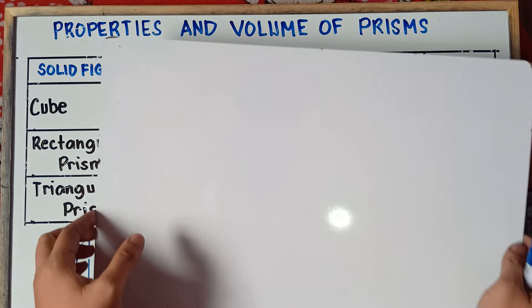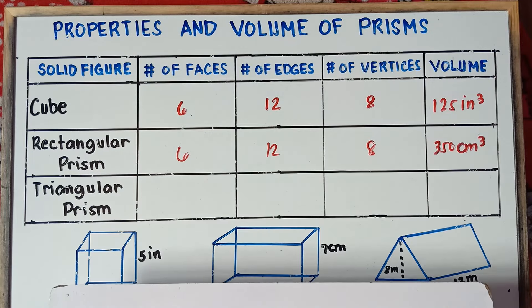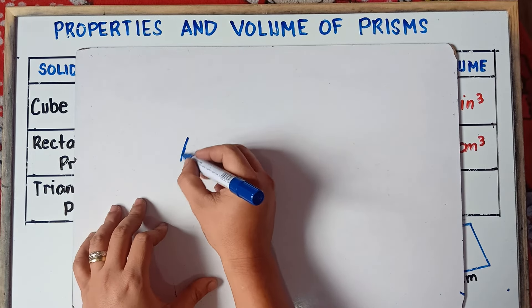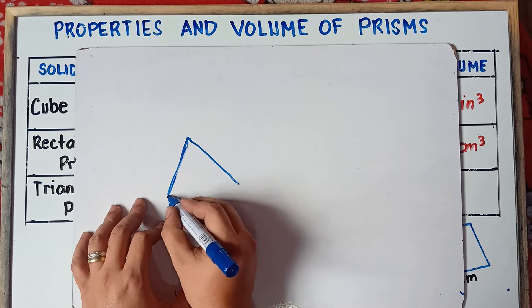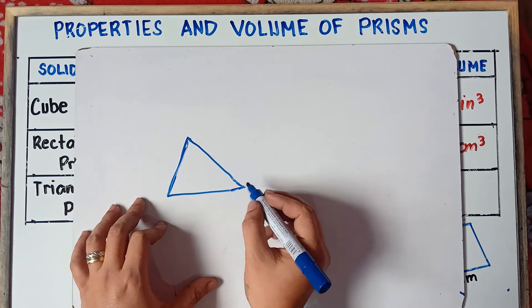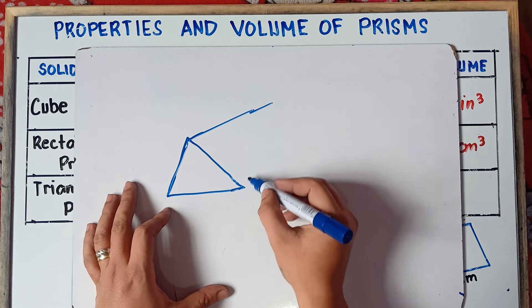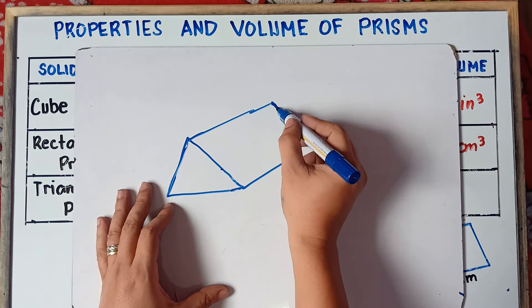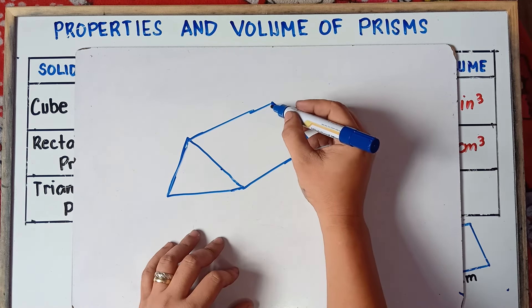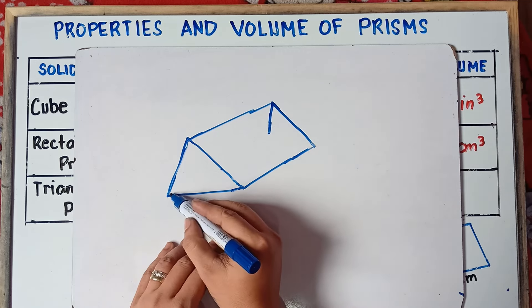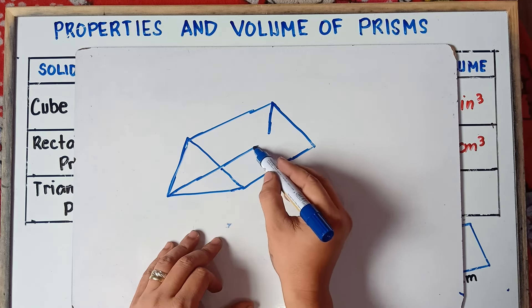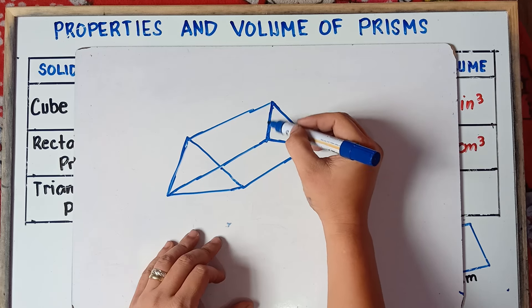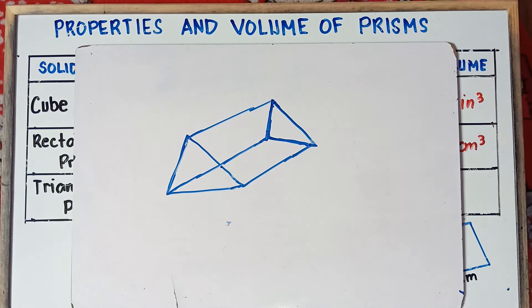Let's proceed now to triangular prism. First thing to do is you draw a triangle. Then you draw this line, and draw another line parallel to it. And then you draw the connecting lines. This will be our triangular prism.